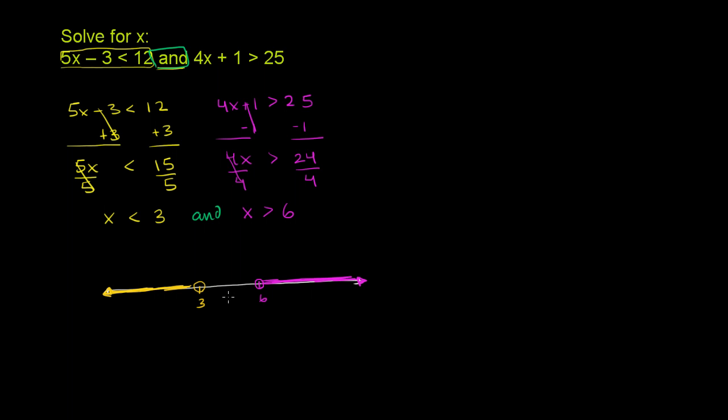But when you look at it right over here, it's clear that there is no overlap. There is no x that is both greater than 6 and less than 3. So in this situation, we have no solution.